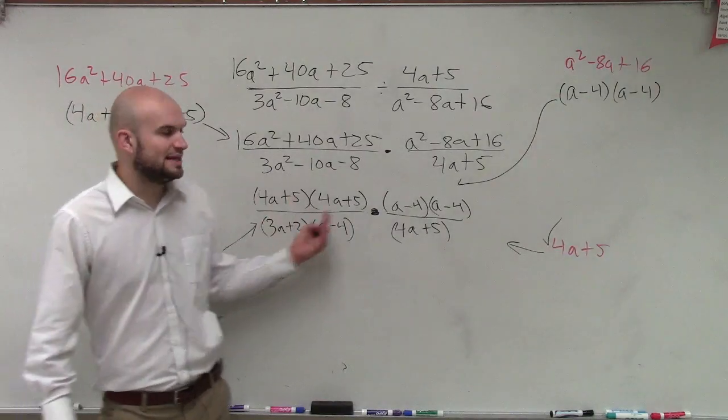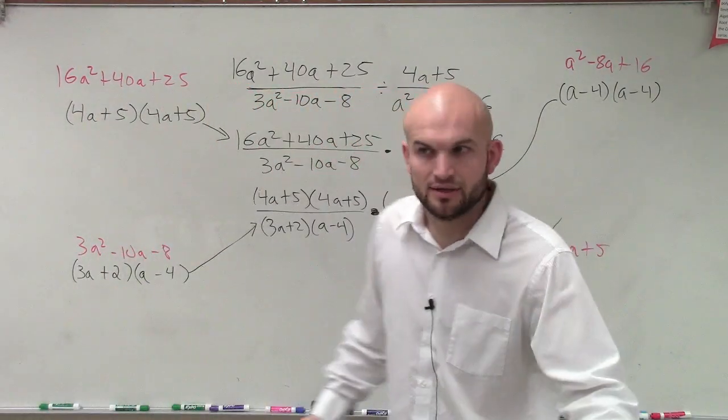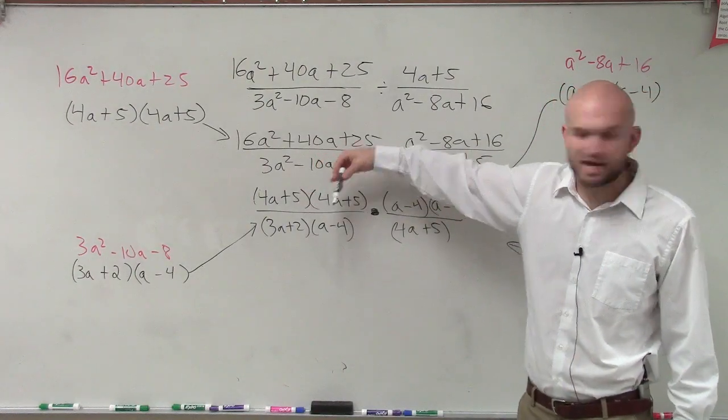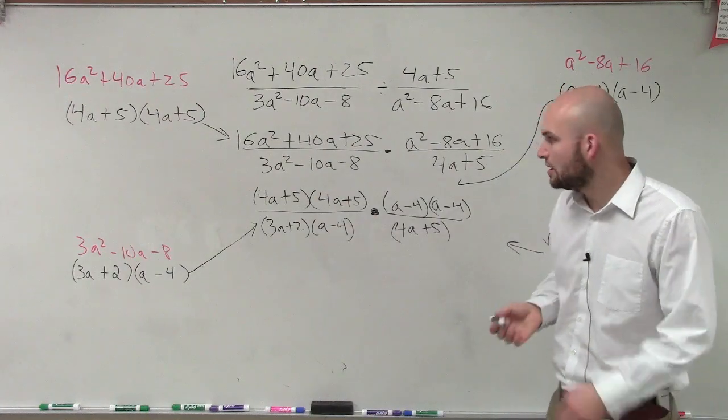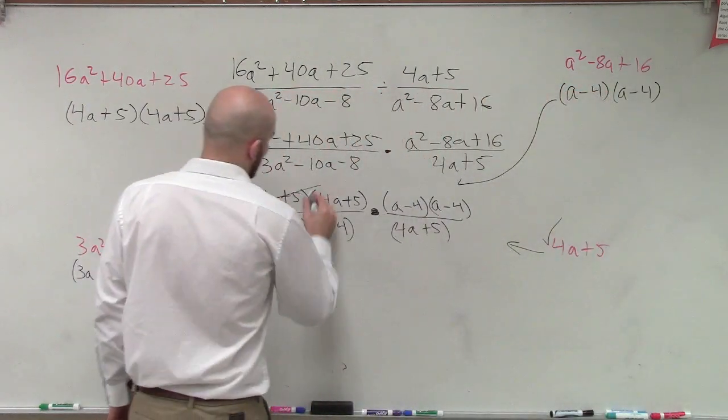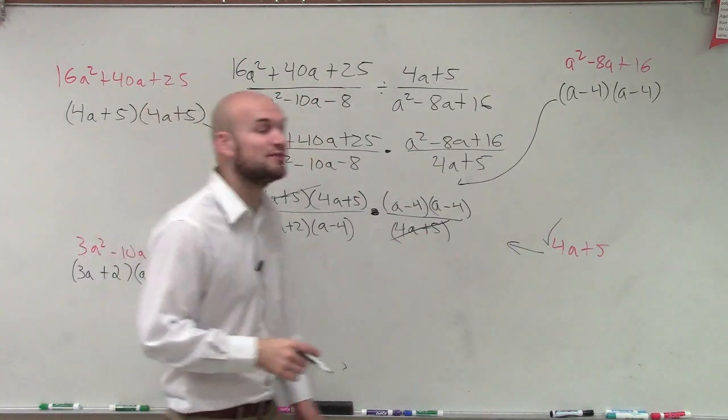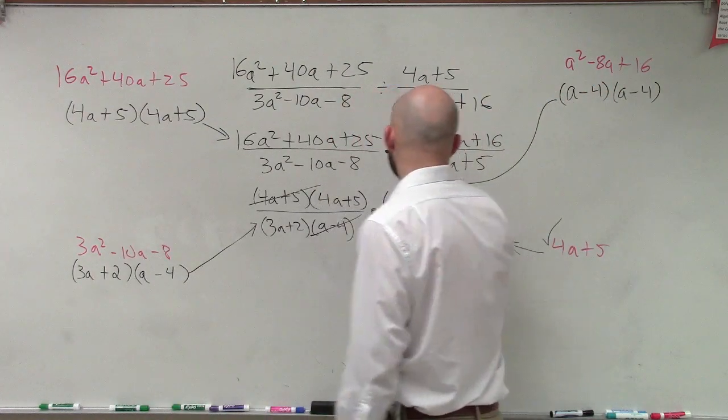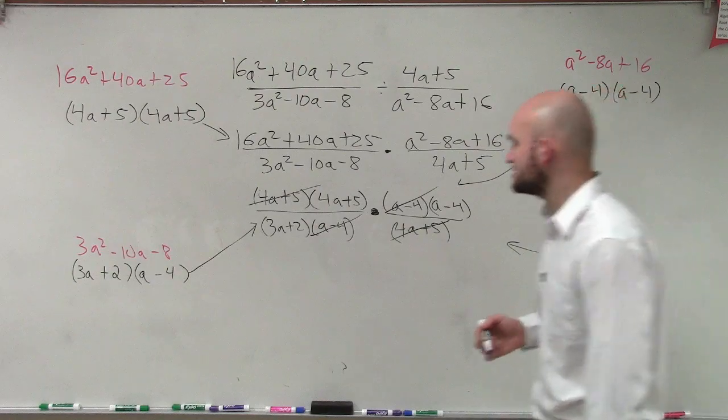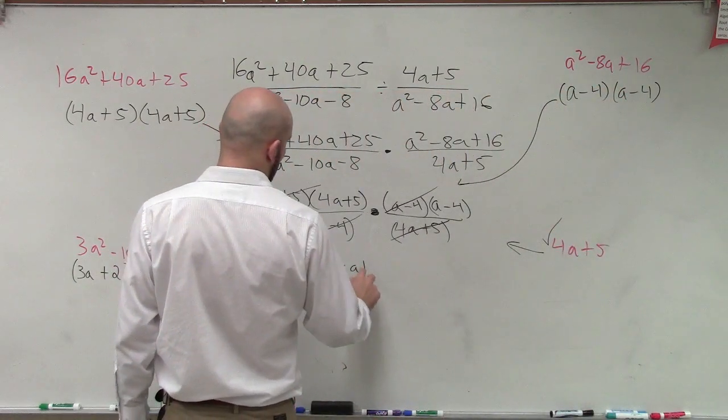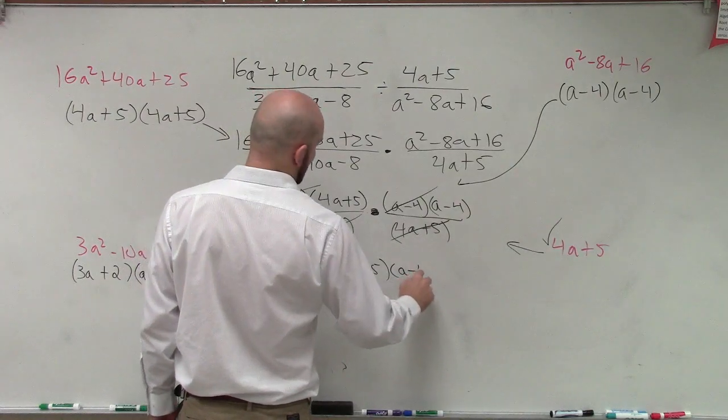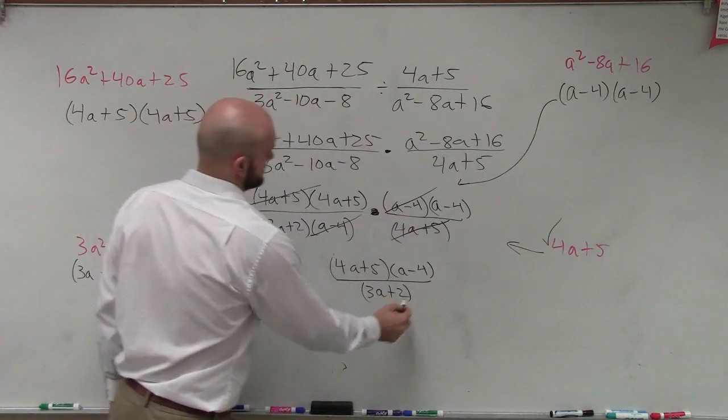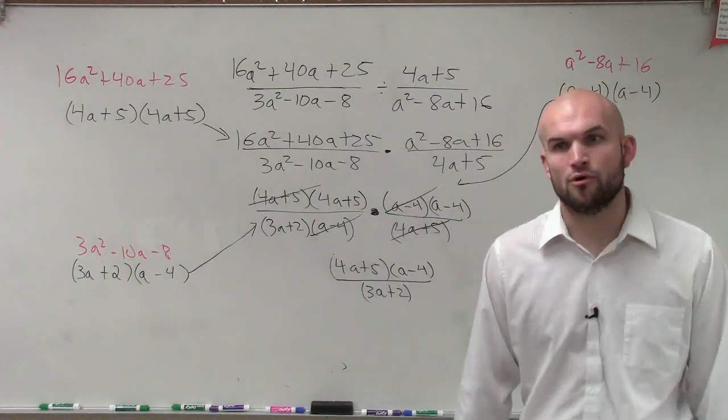Now what you notice, guys, between each one of my expressions I'm multiplying. So that means I can divide all of these terms. I can rewrite this as one big multiplication problem. And that's helpful because now I know that the 4a plus 5 divided by 4a plus 5 is going to give you 1. I know this a minus 4 divided by this a minus 4, that's going to equal 1. And that's just going to leave you with a final expression of 4a plus 5 times a minus 4 divided by 3a plus 2. So that would be my simplified form to work.